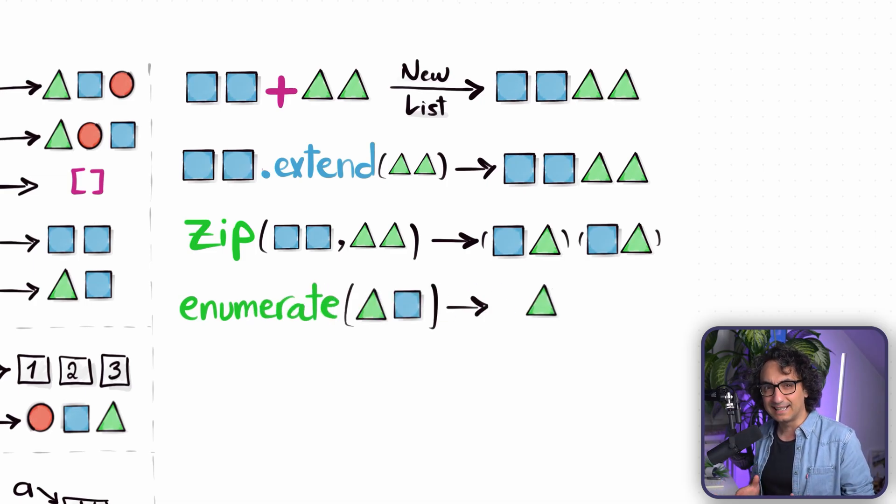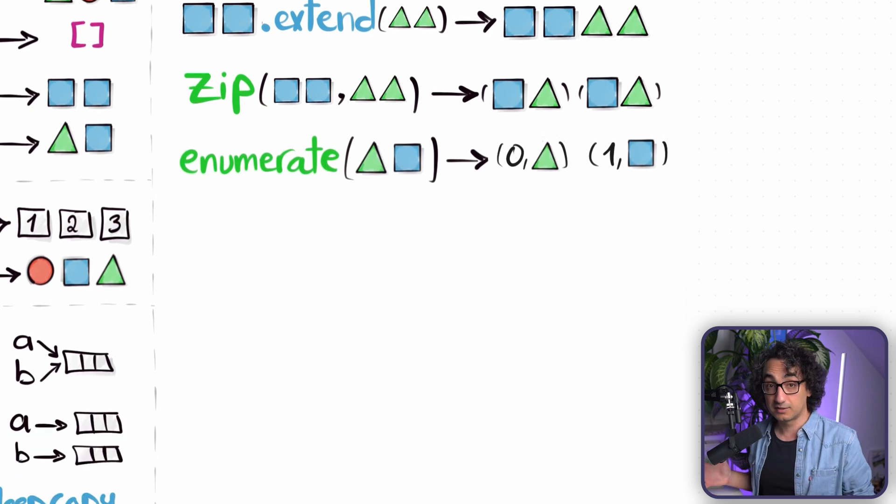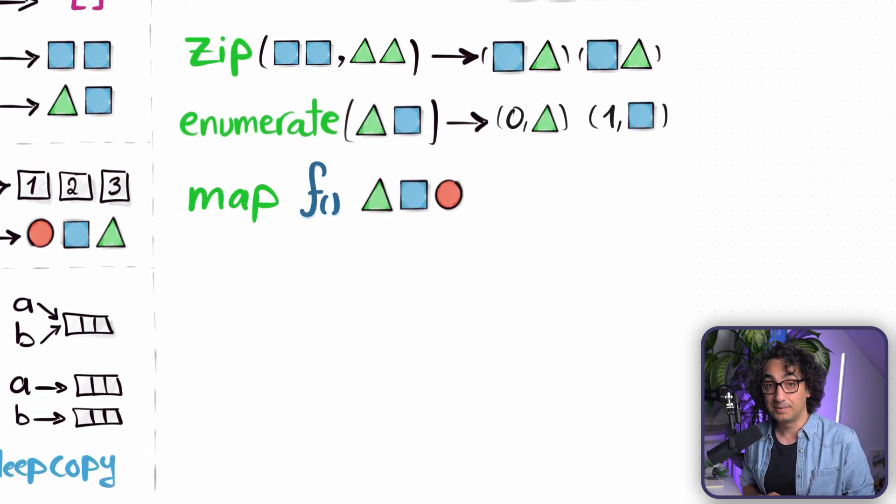And another nice function we have is enumerate. It's going to go and automatically add an index number for each item of your list, so it's pairing the values with their index. Now we come to something serious and very powerful. In real projects we have a function called map. It's going to go and apply a function, a data transformation, for every single item inside our list, like for example changing all the letters to lowercase or to uppercase, or doing some casting, so we are applying a data transformation for all the items.